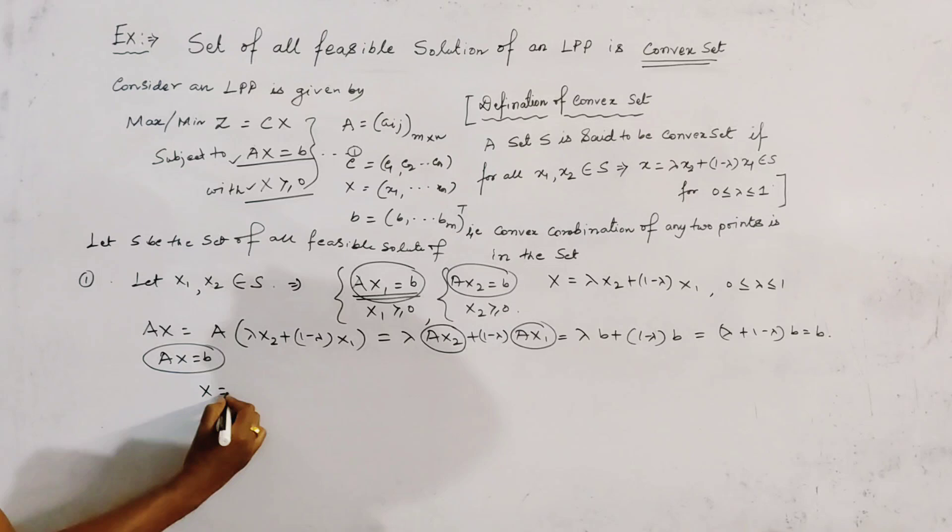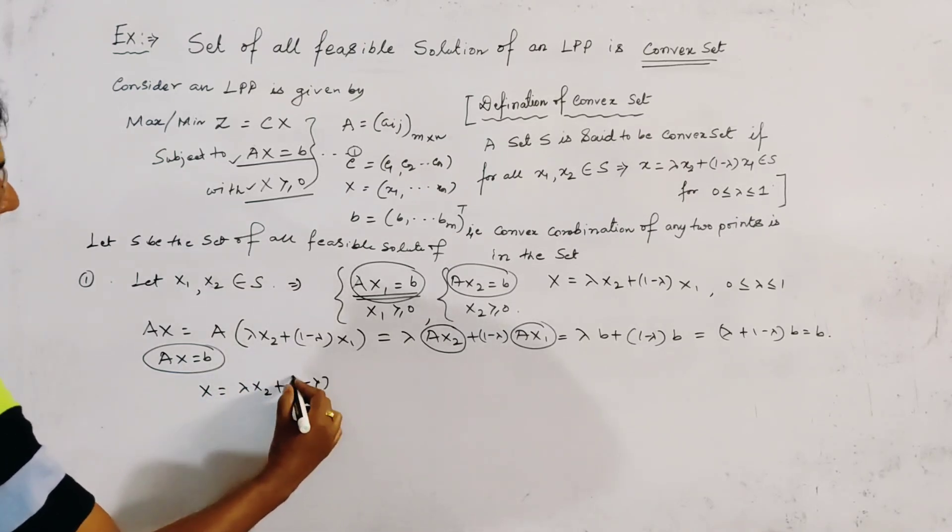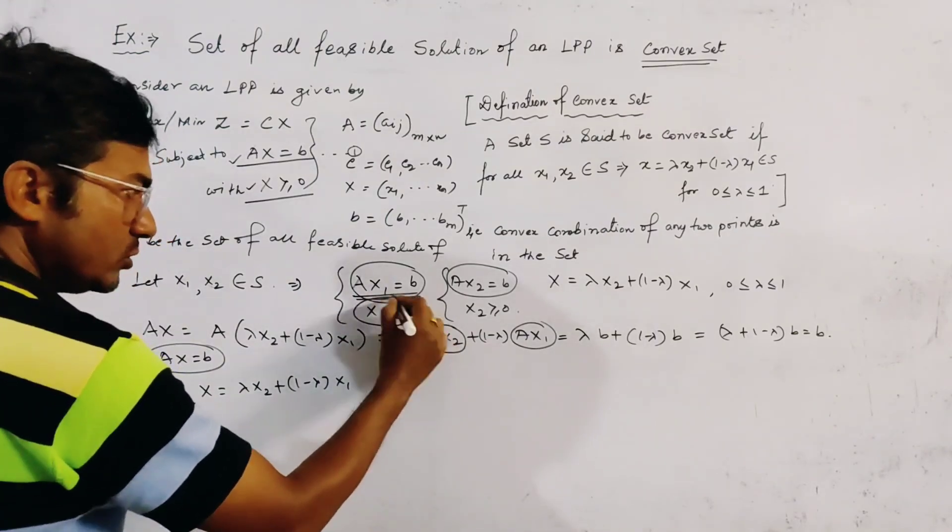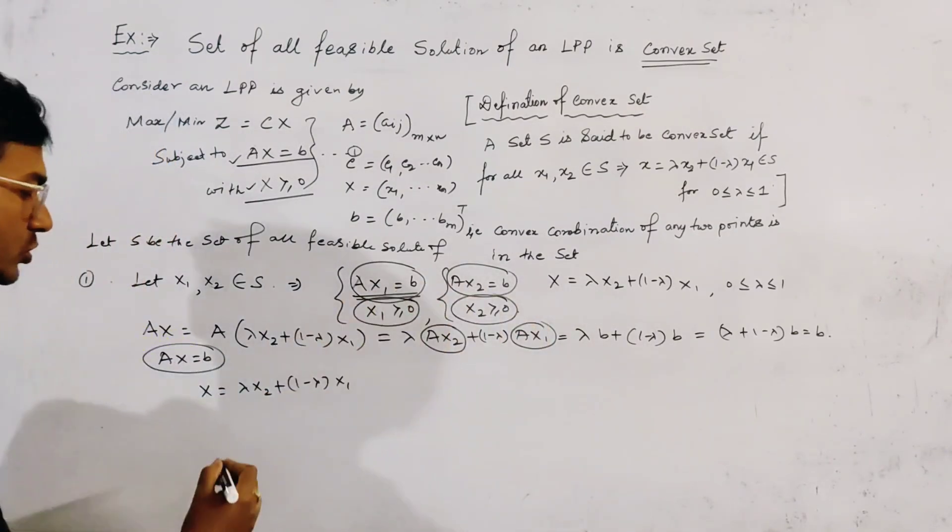And for the second condition, X, this is equal to lambda, X2, plus 1 minus lambda, into X1. Here, we already get X1, equal to 0, and X2, equal to 0.